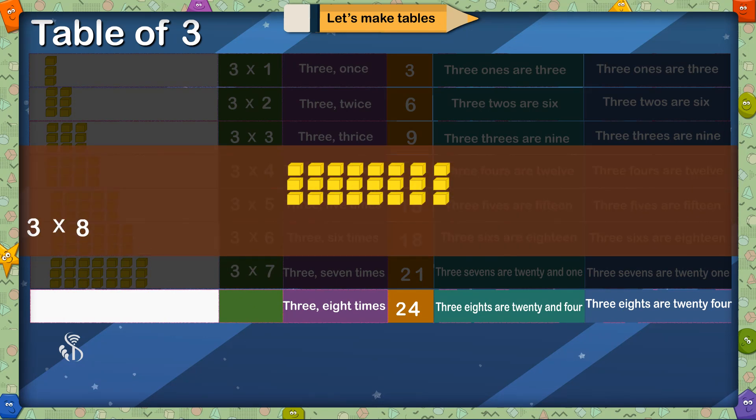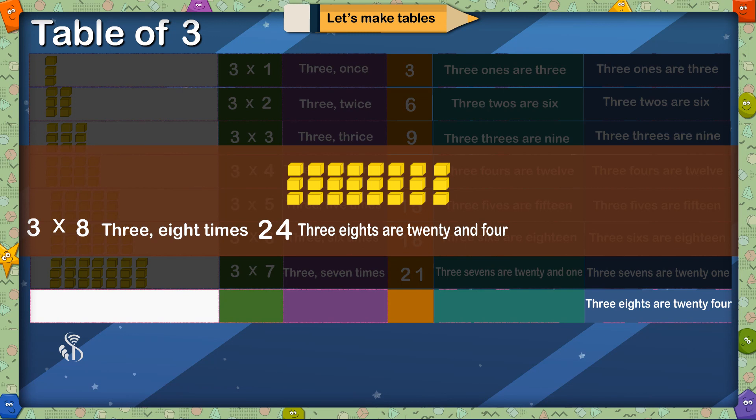3 multiplied by 8, 3 8 times is 24, 3 8s are 20 and 4, 3 8s are 24.